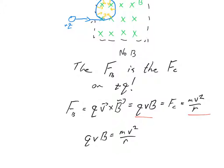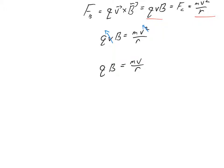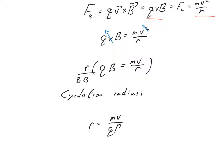So let me set these equations equal and do some manipulation. I have QvB equals mass times speed squared over radius. I have velocity on both sides, so I can cancel that term. My expression becomes QB equals mv over r. We often solve this for what's called the cyclotron radius — the radius of the circle in which a charged particle moves in a magnetic field. Multiply both sides by r and divide both sides by QB, and you get r equals mv over QB. And that's the cyclotron radius.